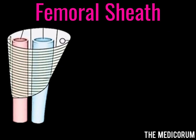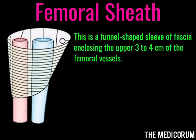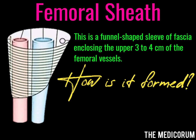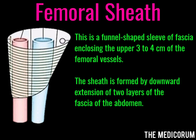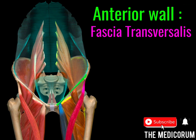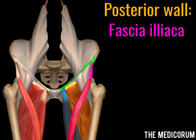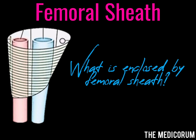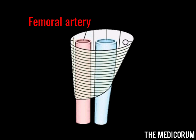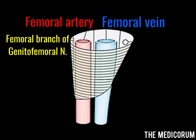Moving on to the femoral sheath: the femoral sheath is a funnel-shaped sleeve of fascia which encloses the upper three to four centimeters of the femoral vessels. It is formed by the downward extension of two layers of fascia of the abdomen — anteriorly the extension of fascia transversalis, and posteriorly the extension of fascia iliaca. The femoral sheath encloses the femoral artery, femoral vein, femoral branch of the genitofemoral nerve, and some lymph nodes. Note that the femoral nerve is not enclosed by the femoral sheath.